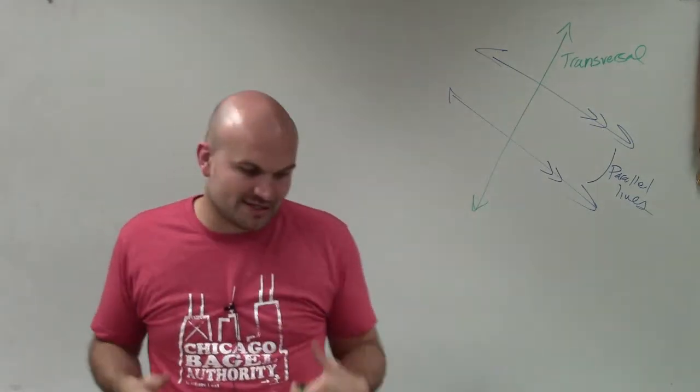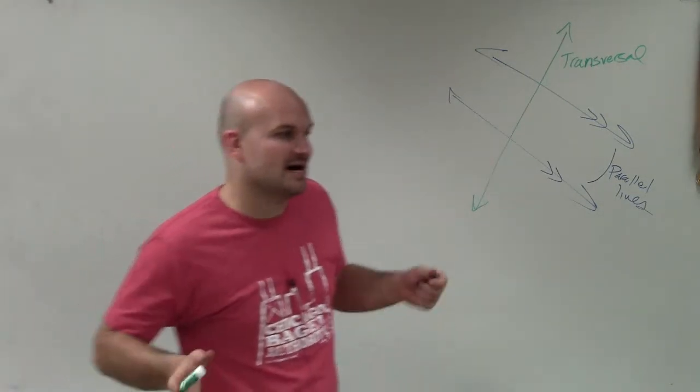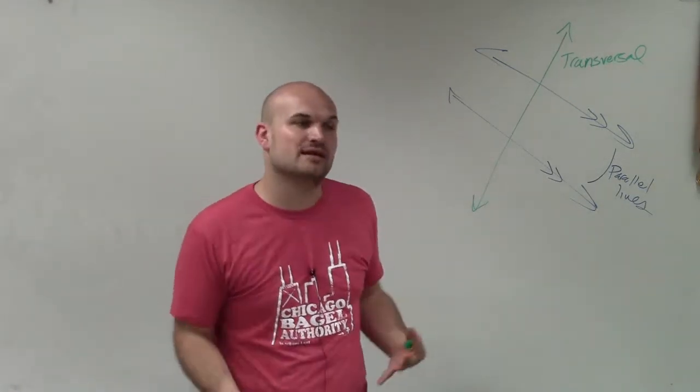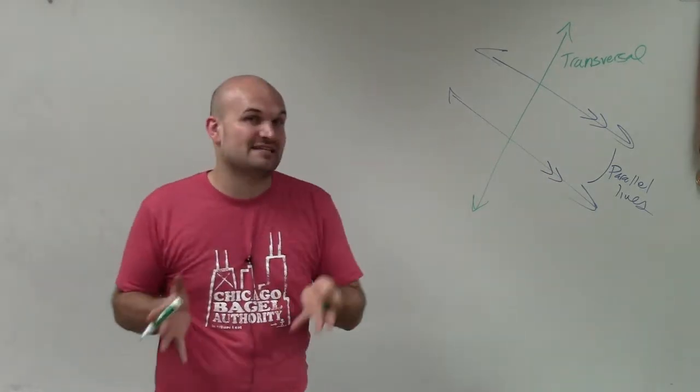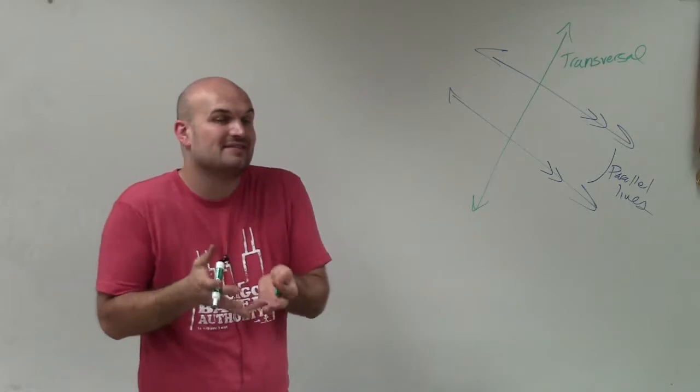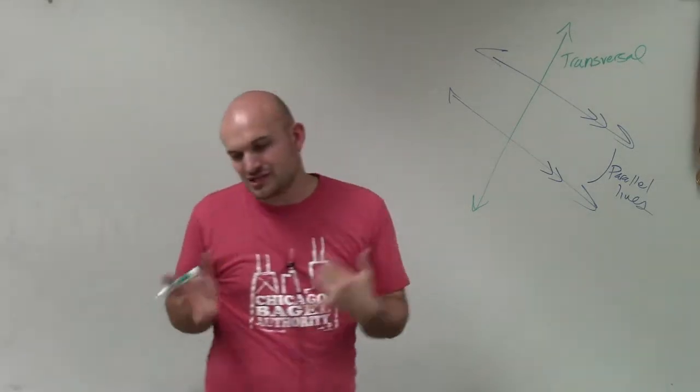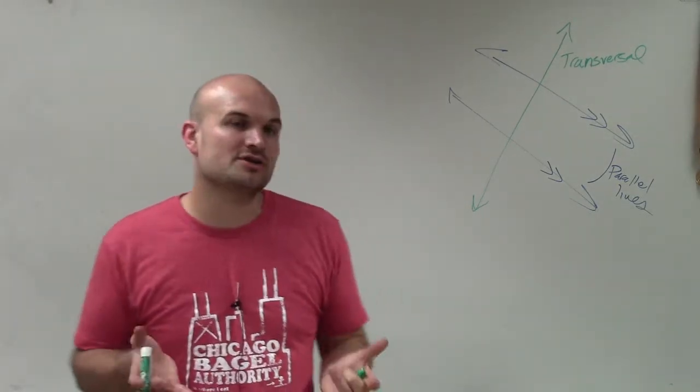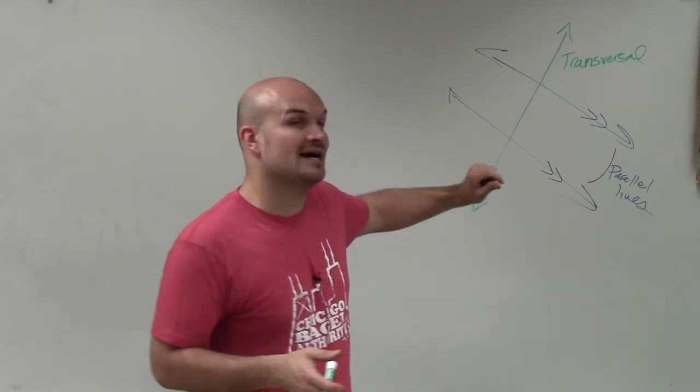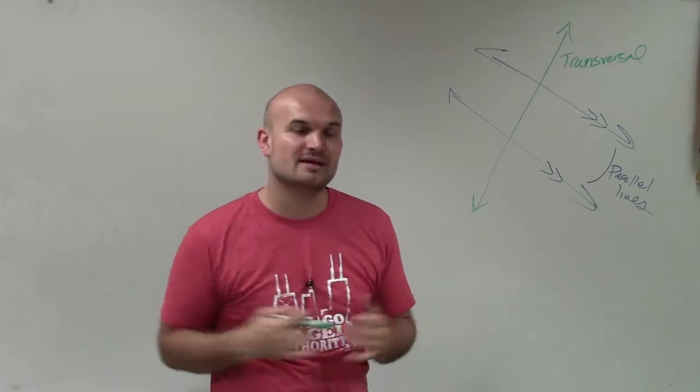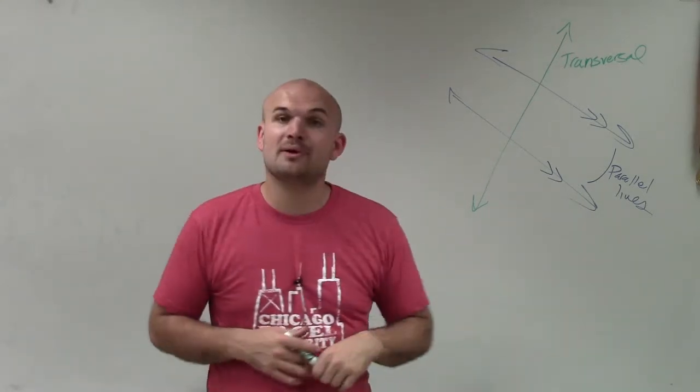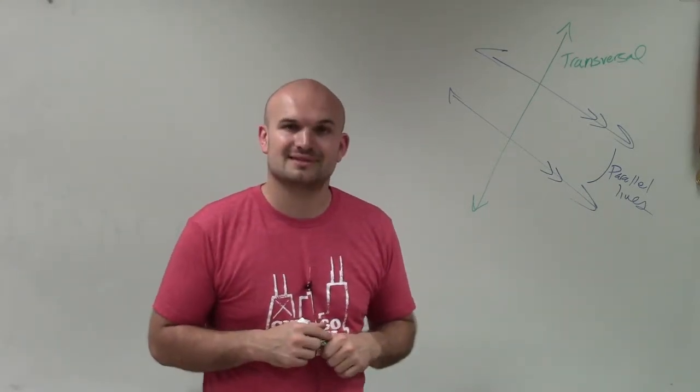And the transversal and the parallel lines are going to become very important on our angle relationships that we're going to be talking about. As long as a transversal intersects two lines, we're going to have these angle relationships. But the angle relationships are going to become so important to our understanding when we have two parallel lines intersected. So there you go, ladies and gentlemen. That is just a basic video for understanding what are parallel lines and a transversal. Thanks.